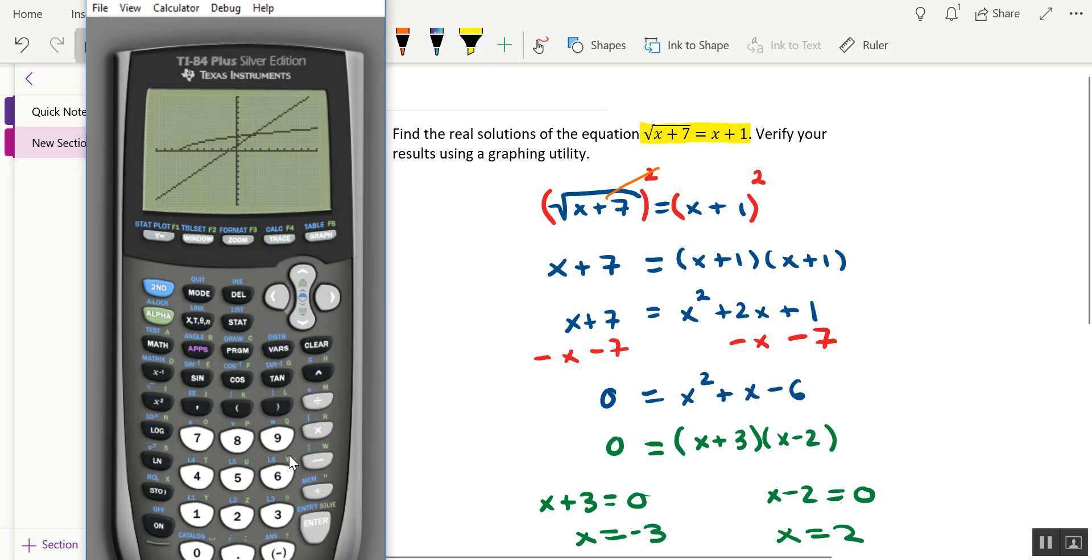And based on the location of the point of intersection, i.e., it's in quadrant 1, and any point in quadrant 1 has a positive x-coordinate, positive y-coordinate, you can probably tell that x equals 2 is the actual solution to the equation.